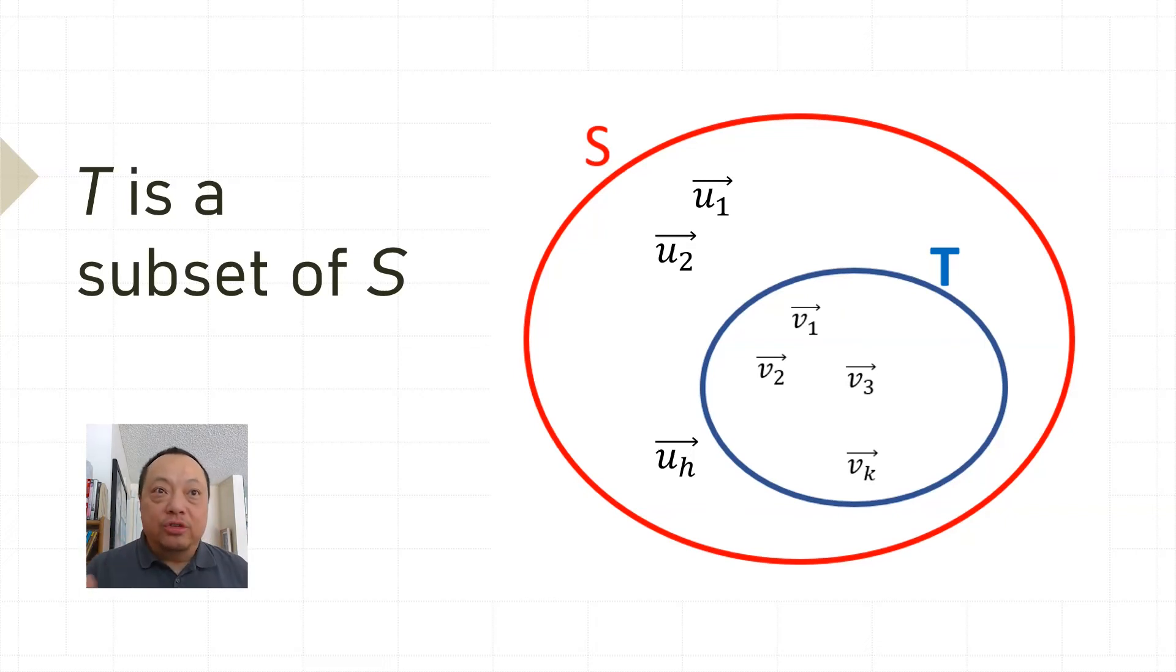By the way, these u vectors may not exist. T is a subset of S but it may not be a proper subset. It may be so big that it's actually as big as S. We'll see that it doesn't matter. It doesn't affect our proof.